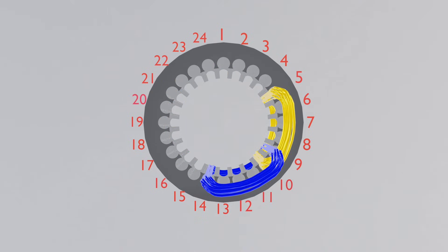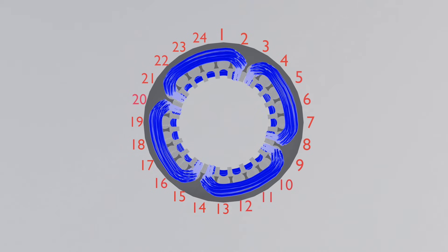The first coil of B phase starts from slot 9 according to phase angle, which is 4 from Y phase. All coils of B phase are arranged as R and Y phase.